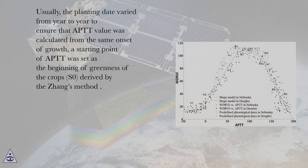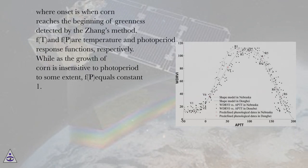Usually, the planting date varied from year to year to ensure that APTT value was calculated from the same onset of growth. A starting point of APTT was set as the beginning of greenness of the crops (SOS) derived by the Jong's method, where onset is when corn reaches the beginning of greenness detected by the Jong's method.